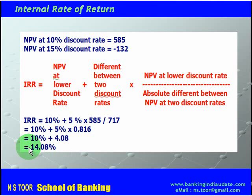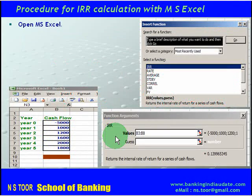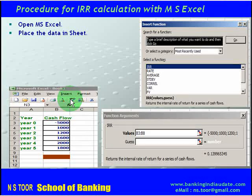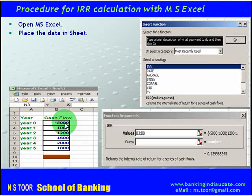If we discount the cash inflows at 14%, the net present value will be equal to zero. Now we shall make the same calculation by using the MS Excel function. We shall open MS Excel, and when it opens, this spreadsheet will appear. We shall place the same data: minus 5000 as the investment.